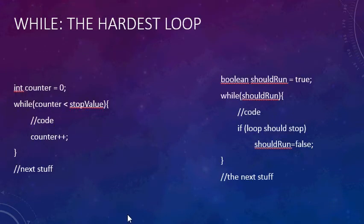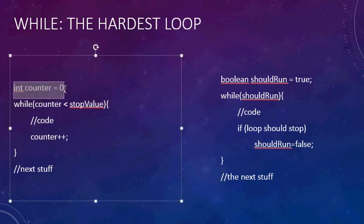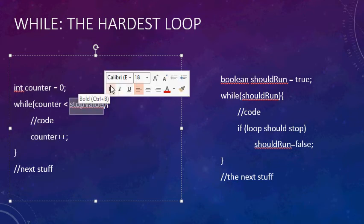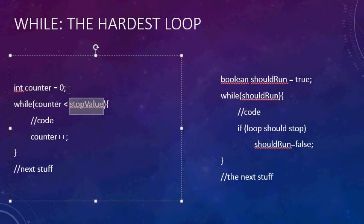Here are two examples of while loops. On the left, we declare 'int counter = 0', then 'while counter less than stopValue', we have our code, and then 'counter++'. This is the correct way to implement a while loop that's not going to be infinite. We know for sure it's not infinite because every run of the loop we're incrementing counter by one, and once counter reaches stopValue — say 15 or 20 — it's going to stop being less than stopValue.